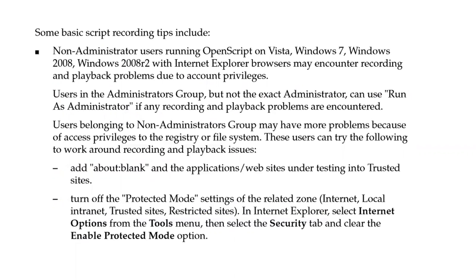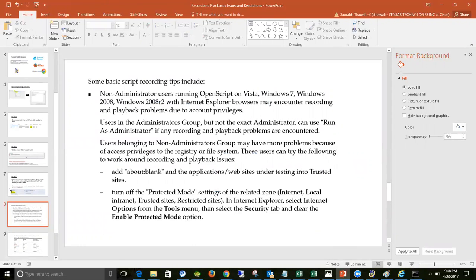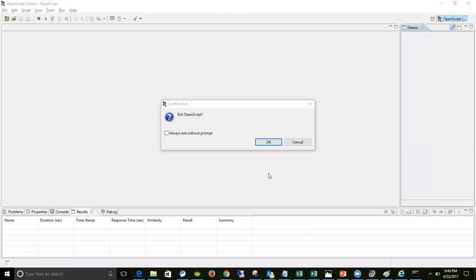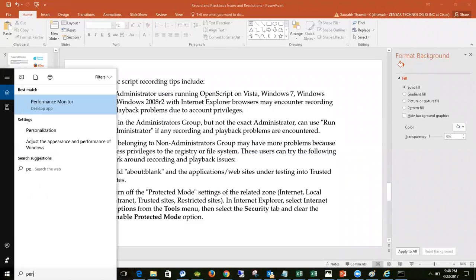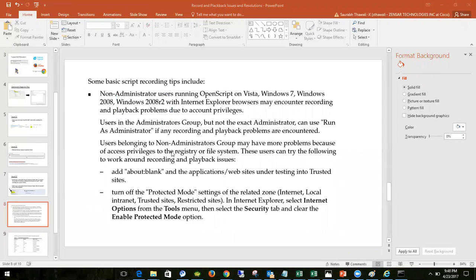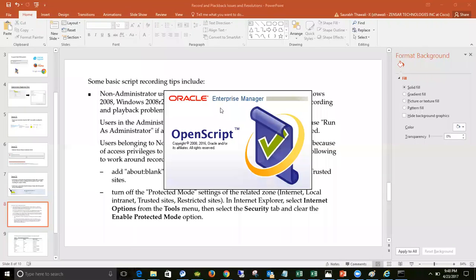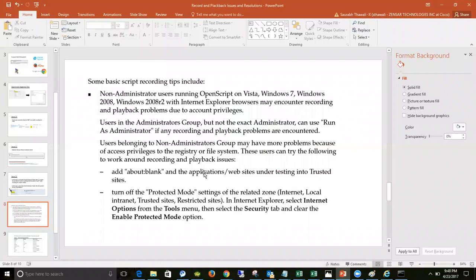If you are a non-administrator user working with OpenScript on Vista, Windows 7, Windows 8, or Server R2, you will more frequently encounter administrator-related issues. Many OpenScript operations require administrator privileges. To avoid this, make a practice of opening OpenScript with administrator privilege: right-click on the OpenScript icon and select 'Run as Administrator.' Most of your issues should go away with this approach.